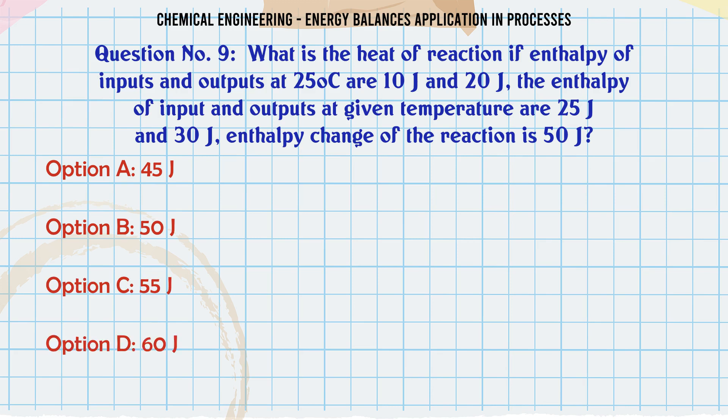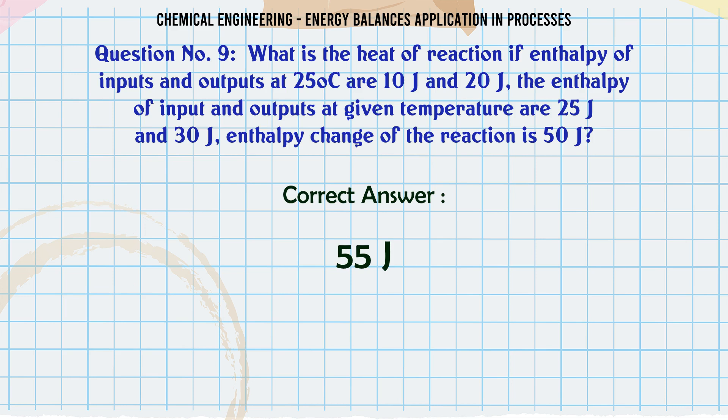What is the heat of reaction if enthalpy of inputs and outputs at 25°C are 10 J and 20 J? The enthalpy of inputs and outputs at given temperature are 25 J and 30 J. Enthalpy change of the reaction is 50 J. A: 45 J. B: 50 J. C: 55 J. D: 60 J. The correct answer is 55 J.